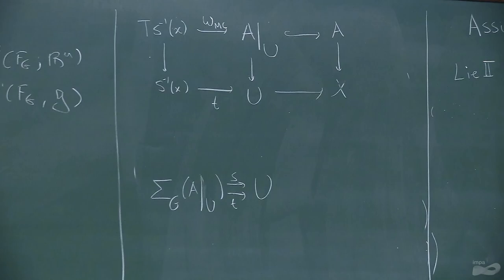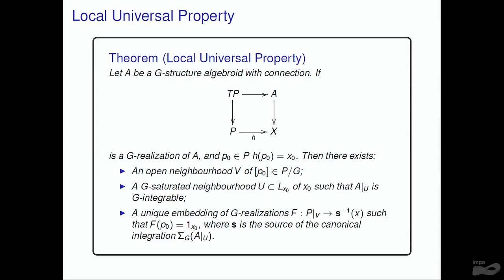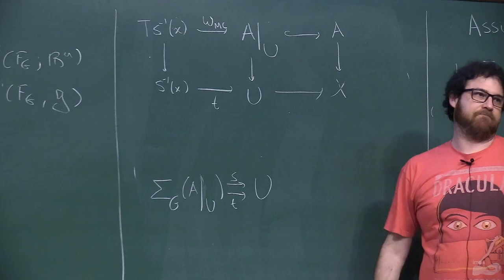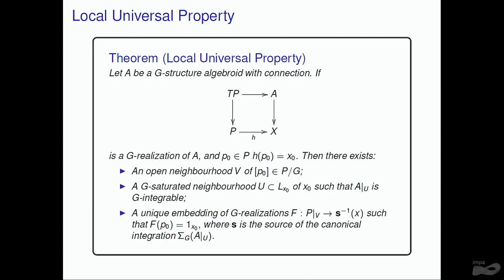These solutions are somewhat universal: every solution of your problem locally looks like this. Any other solution, after restricting to a small enough saturated neighborhood on the total space of your bundle (or on the base), can be identified with one of these locally — there's an equivalence of G-structures, or an equivalence of realizations, to one of these. Let me sketch a proof, though I'll cheat by assuming P mod G = M is a manifold instead of an orbifold; the theorem is true in general.